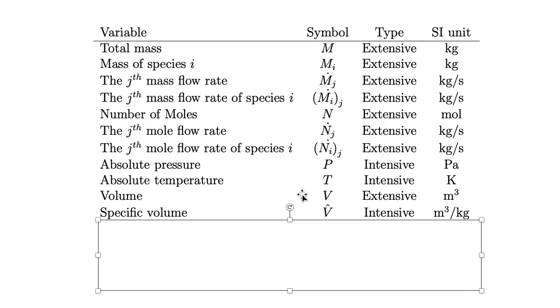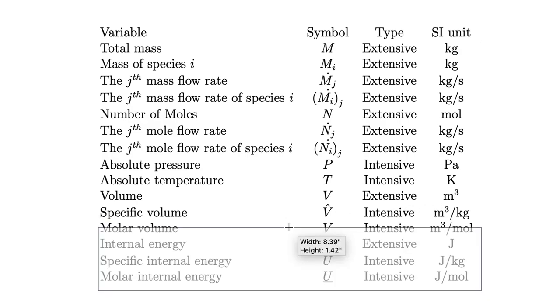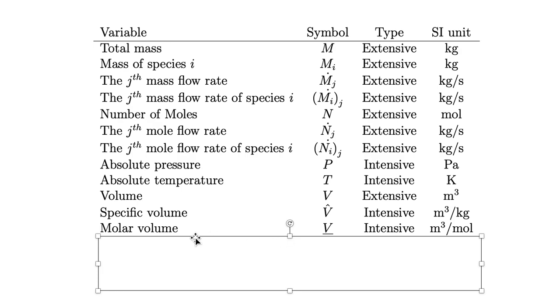Next we'll use V for volume, capital V. That's an extensive property with SI units of cubic meters. Then specific volume can be defined as the volume per unit mass, which is an intensive property with SI units of cubic meters per kilogram. Similarly we can define a molar volume - we'll use a capital V with an underline under it. That would also be an intensive property with units of cubic meters per mole.